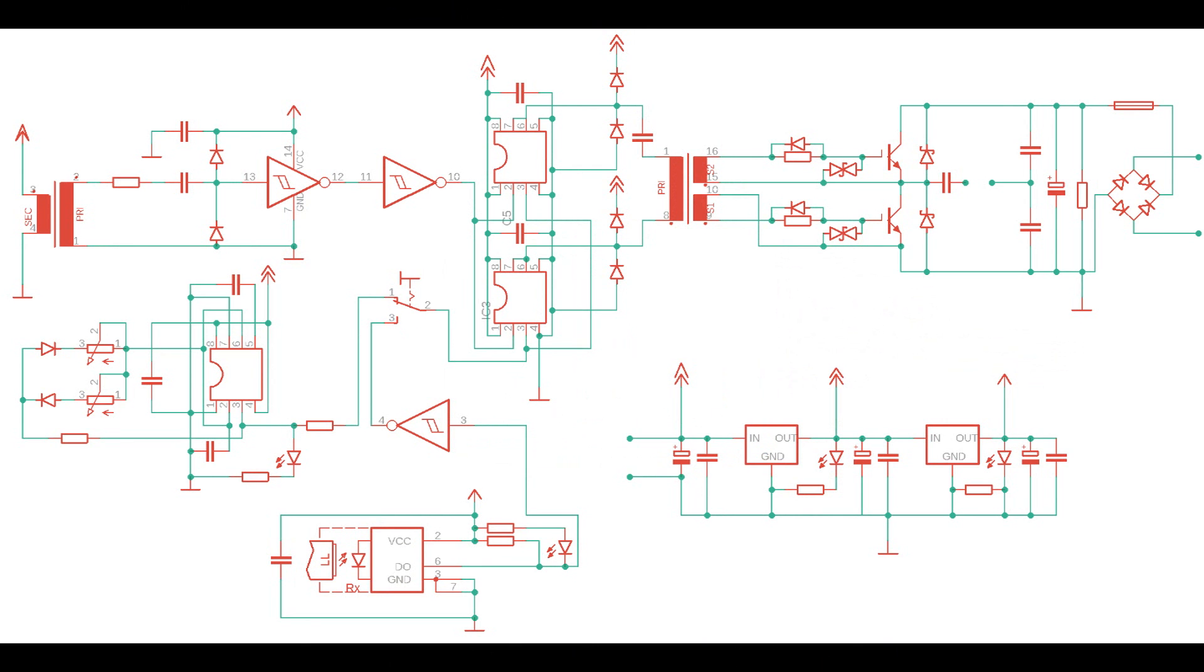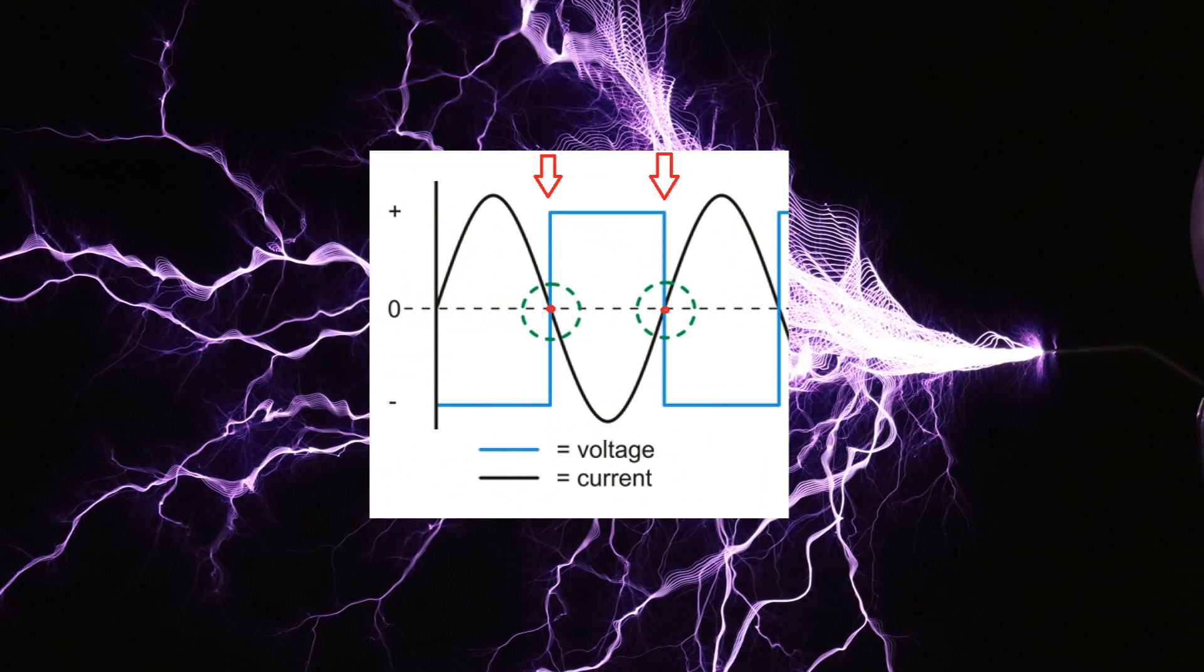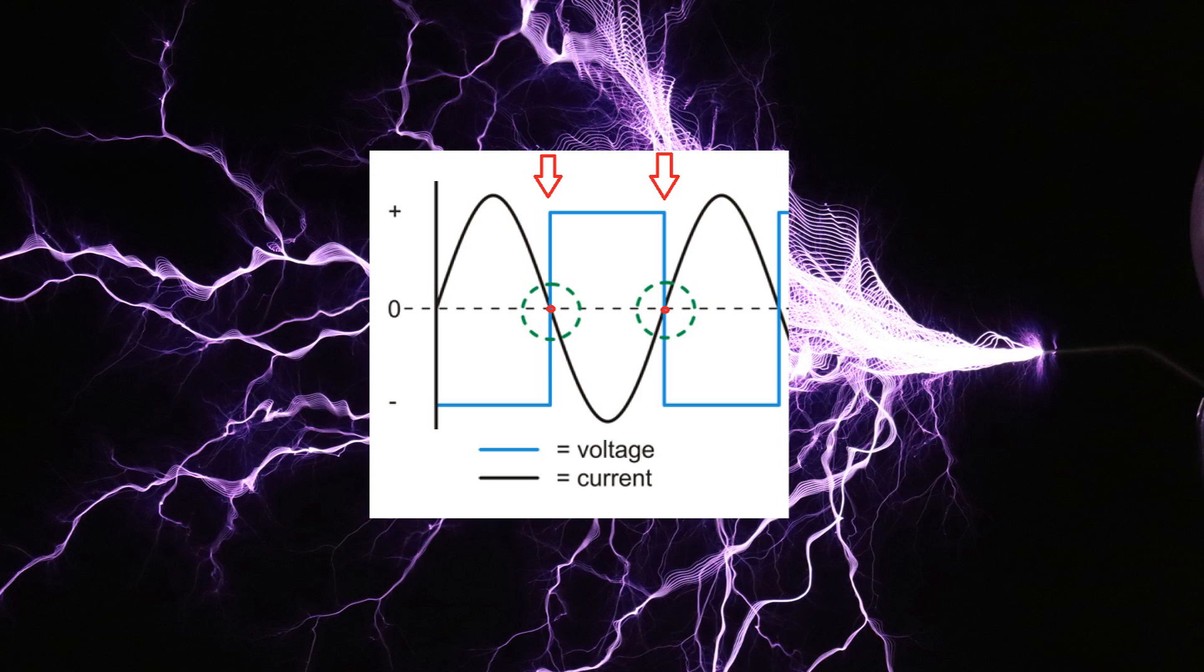This is exactly the problem with the circuit from our last video. The solution is a D flip-flop, a 14-leg IC called 74SL74. Simply put, this ensures that the DRSTC circuit is only interrupted when there is no current flow. This makes the circuit only slightly more complicated, but improves it enormously.